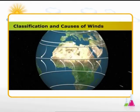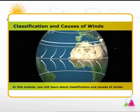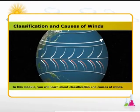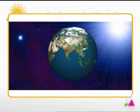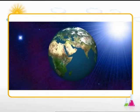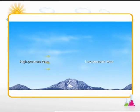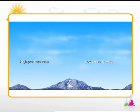Classification and causes of winds. In this module you will learn about classification and causes of winds. Wind is air in motion. The wind moves because the earth's surface is heated differently in different places. Difference in temperature causes difference in pressure, and air moves from high pressure areas to low pressure areas, causing winds.